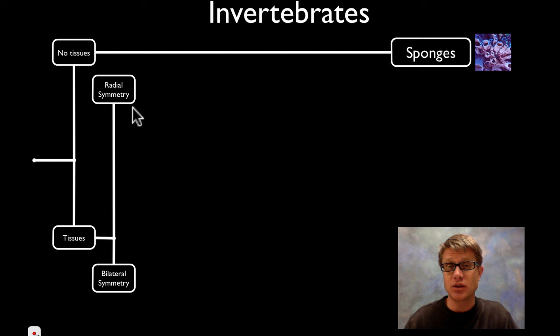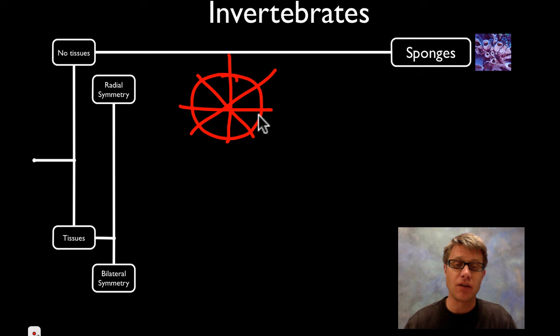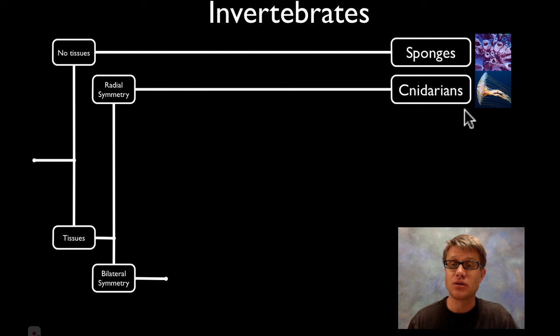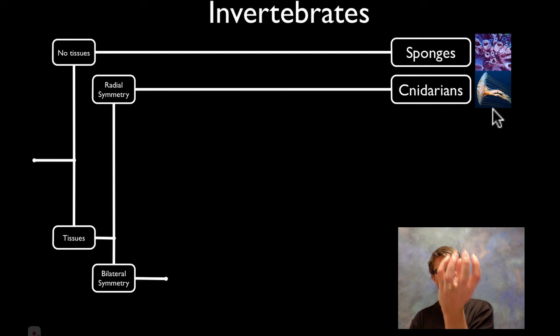The next way we divide them is based on their symmetry — basically how you look right to left or front to back. The two types are radial symmetry, where no matter which way you cut the organism it looks the same, and bilateral symmetry, where there's a clear right side and left side. An example of things that show radial symmetry would be the cnidarians — things like jellyfish and sea anemone.